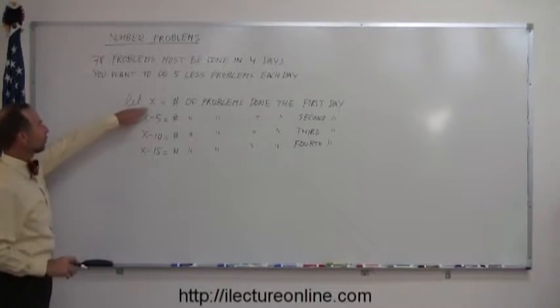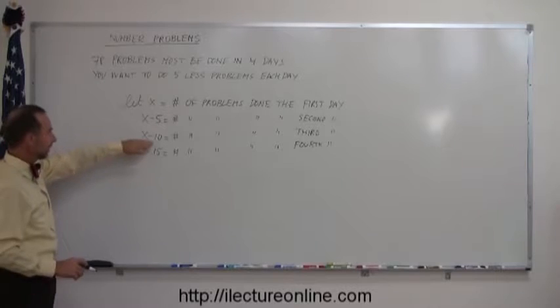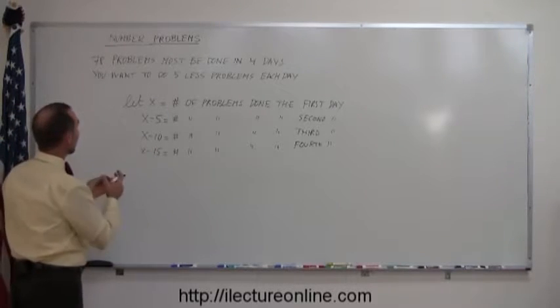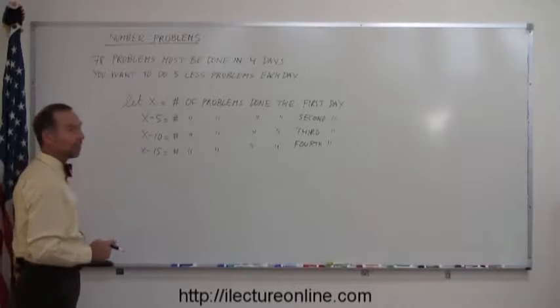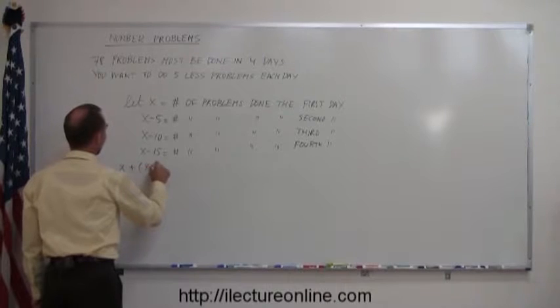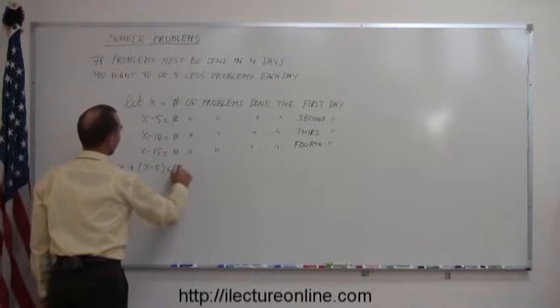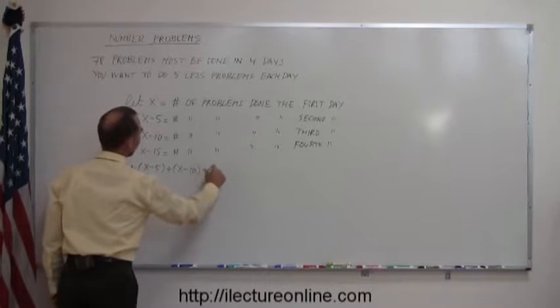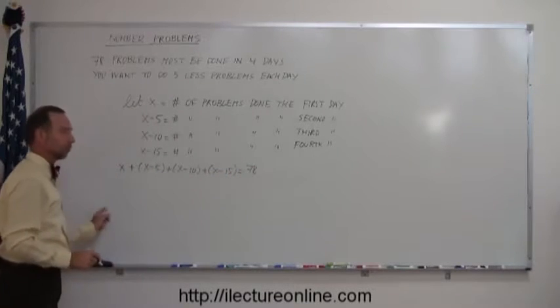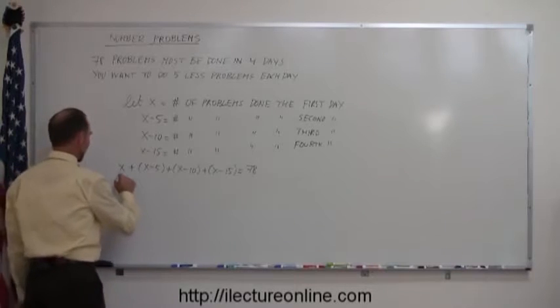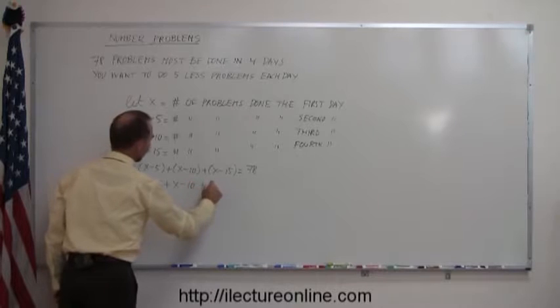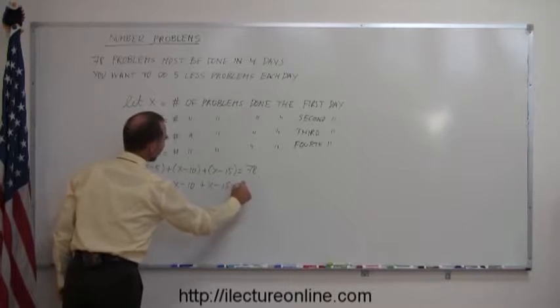So on the first day you'll do x problems, 5 less on the second day, 10 less on the third day, 15 less on the fourth day. And if you add them all together, they should add up to all 78 problems that you must do. So we can then write that x plus x minus 5 plus x minus 10 plus x minus 15 add up to the 78 problems you have to do. First we get rid of the parentheses. So we write x plus x minus 5 plus x minus 10 plus x minus 15 equals 78.